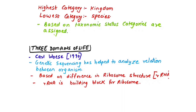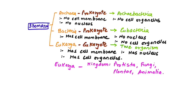Carl Woese in 1990 proposed three domains of life based on genetic sequencing. He found that all living organisms share a percentage of nucleotide sequences — the genetic code A, T, C, G is universally present. Woese focused on ribosomal RNA (rRNA), which is the building block of ribosomes, and based on differences in ribosomal structure, he defined three domains: Archaea, Bacteria, and Eukarya.